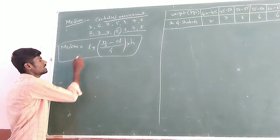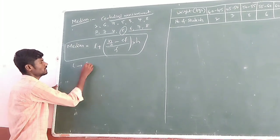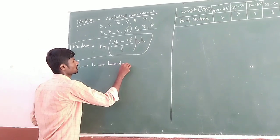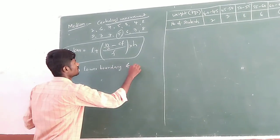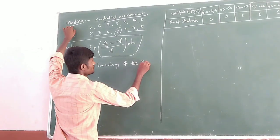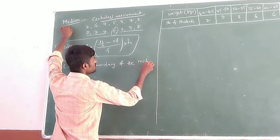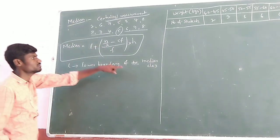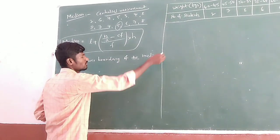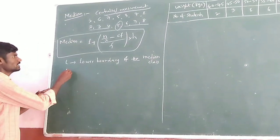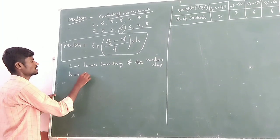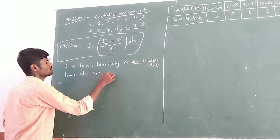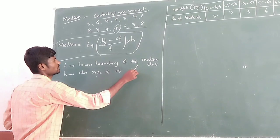So what is L? L is nothing but the lower boundary of the median class. Here we are calculating the median, that is why it is called the median class. Lower boundary of the median class — but what is the median class? We will discuss that in the problem. Next, H — we know that — it is the class size of the median class.